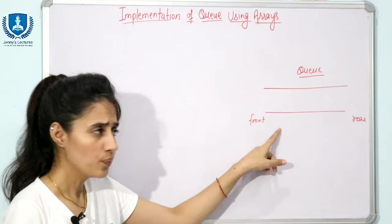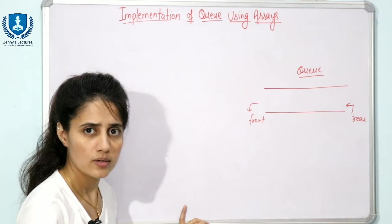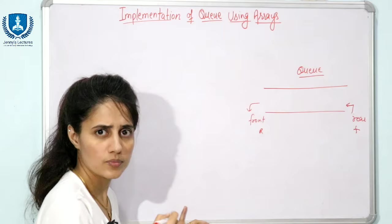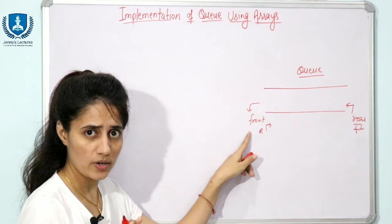This is the front and this is the rear. You can insert data from the rear end and delete data from the front. You can also consider front on one side and rear on the other — that is also fine. Insertion is from rear, deletion is from front. You can choose any option, but you must follow the rule of insertion and deletion.